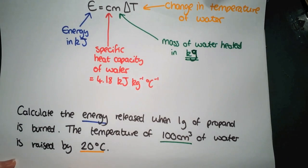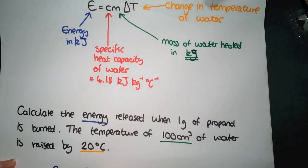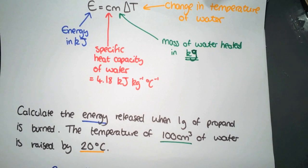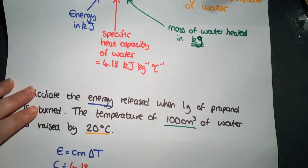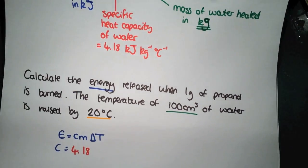So we have E equals CM delta T. So if we take each part in turn, we have E, and it is equal to 4.18. The M.